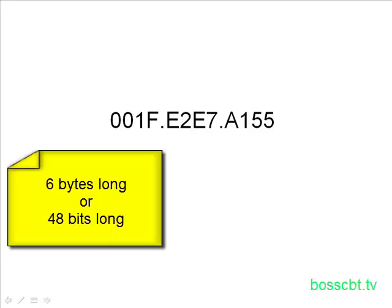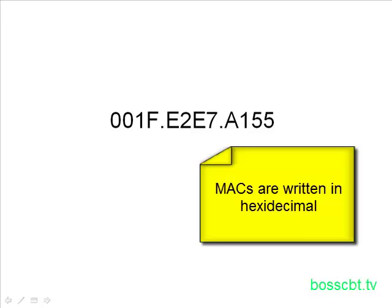This is a MAC address, and this is a real one — it's taken from my PC. The first thing to know is that the total length is six bytes long. There are eight bits in each byte, so you have 48 bits total. MAC addresses are often written in hexadecimal, so if you haven't taken any time yet to get familiar with hex, please do so, because MAC addresses are almost always written in hex.